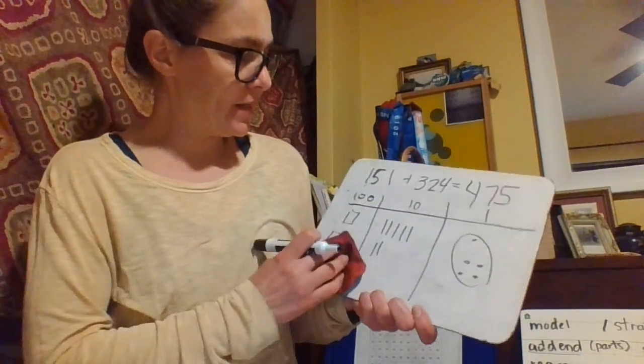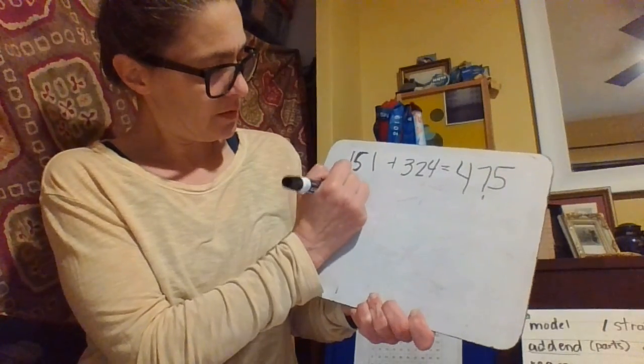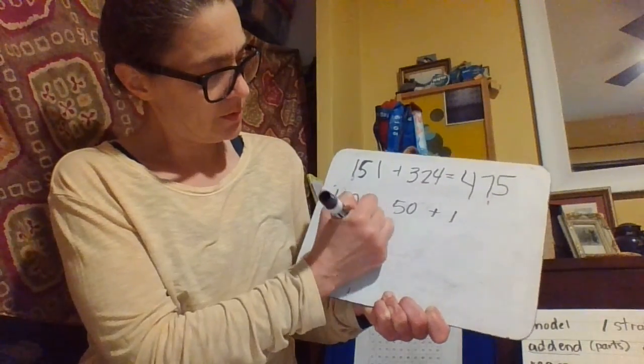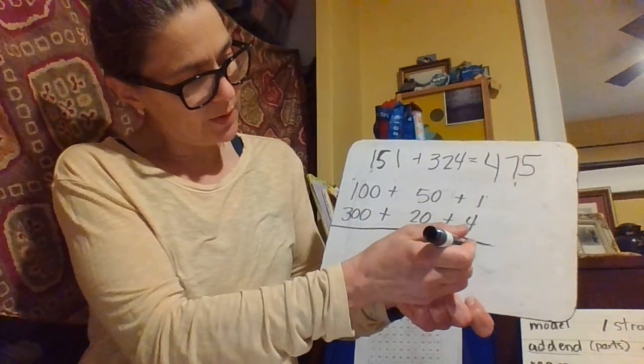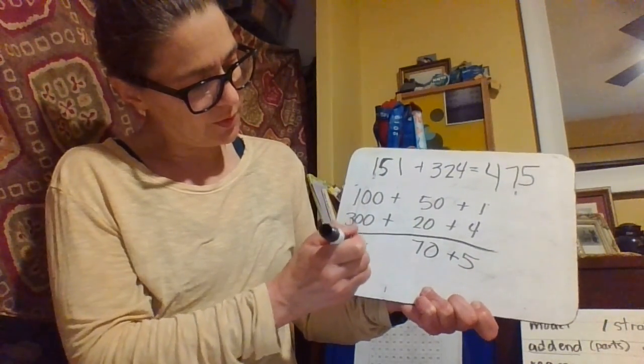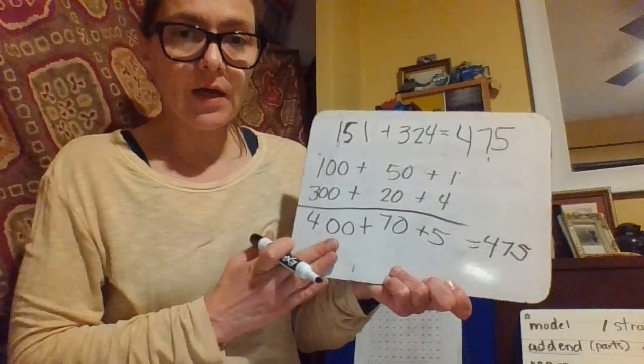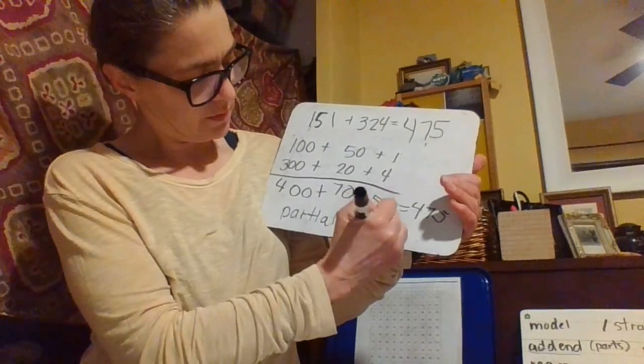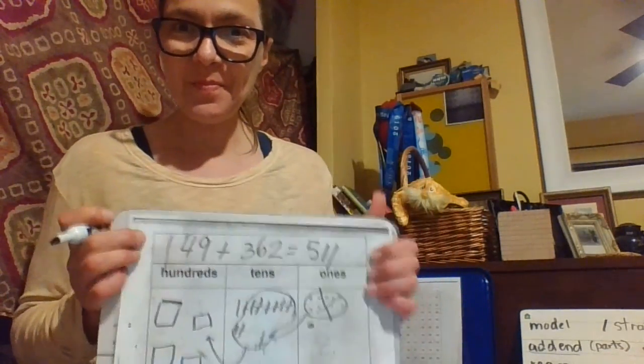Now I'm going to end it here really quickly by showing you what I did in the strategy using partial sums. So 1 plus 4 is 5. 50 plus 20 is 70. 100 plus 300 is 400. And then I add it all back up and I have 475. So this is the strategy. This is partial sums. And this is drawing your model.